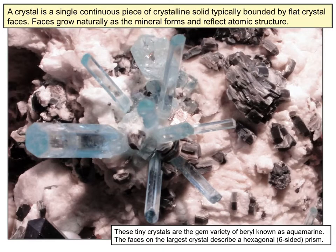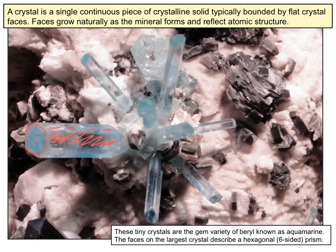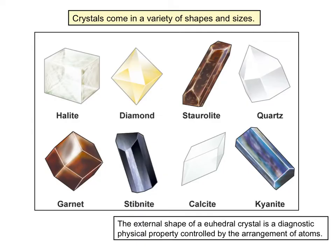A crystal is a form of a mineral that grows from a continuous piece of solid that is typically bounded by flat faces, which grow naturally as the minerals form and typically reflect the internal atomic structure. These are tiny crystals of the gem variety of beryl — you might recognize it as aquamarine. You can see they form very beautiful six-sided prisms, with the end view of one here and the crystal faces visible here.